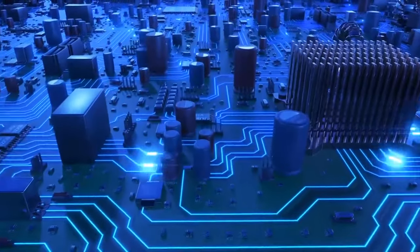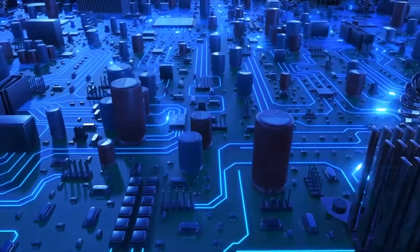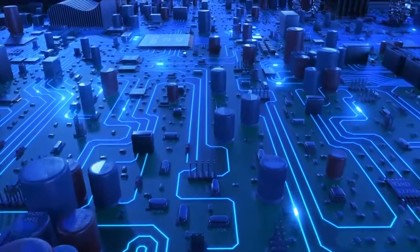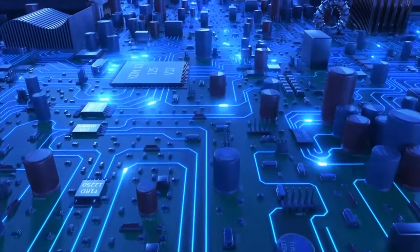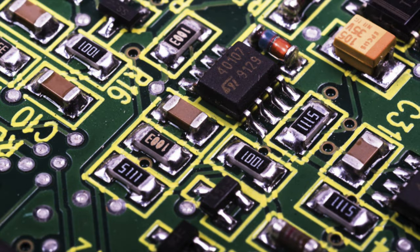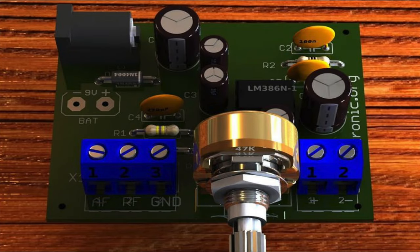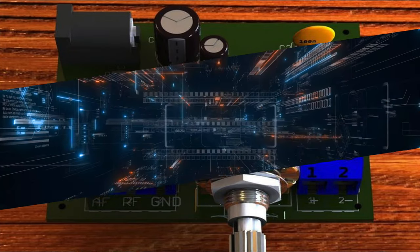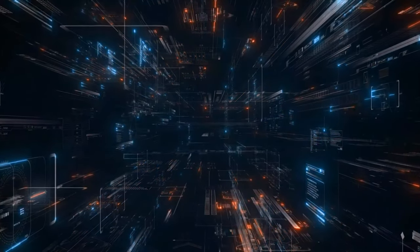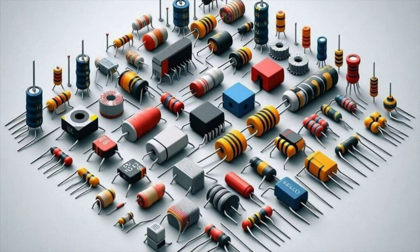Conclusion: resistors are essential components in electrical and electronic circuits that control and manipulate current and voltage. Understanding their properties and selecting the appropriate resistor is crucial for various practical applications, from voltage division and current limiting to sensing and heating. As technology advances, resistors will continue to play a vital role in shaping the future of electronics and beyond.